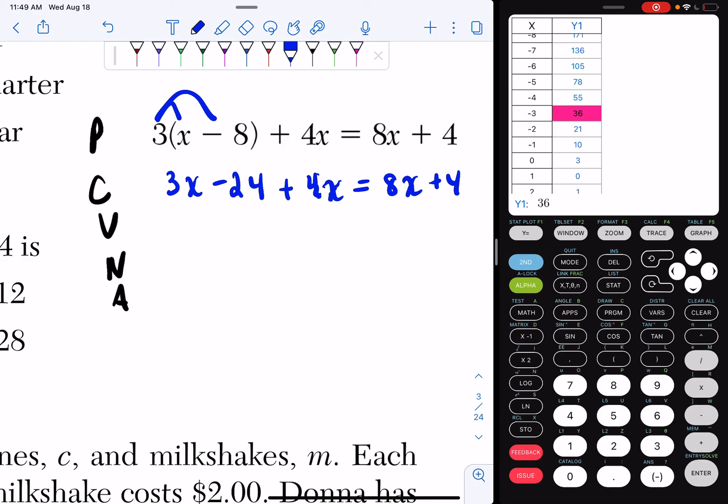Now I know my P is done. Now I combine my like terms and I look at one side at a time. So I'm going to look in this area. What can I combine? I can combine 3x and 4x. So 3x plus 4x is 7x and I have my minus 24. And then I have to ask myself, can I combine 8x and 4? No, I can't. So I'm just going to rewrite them.